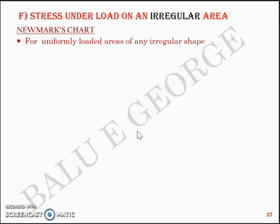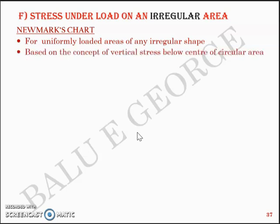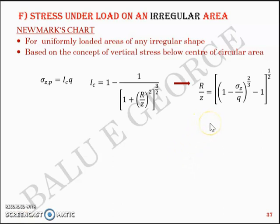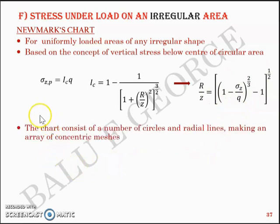For uniformly loaded areas of any irregular shape, you can use Newmark's chart. This is based on the concept of vertical stress below the center of the circular area, which we defined as IC multiplied by Q, where IC equals 1 minus 1 divided by (1 plus (R/Z)²) raised to 3/2. This can be rearranged to give an equation of R/Z related to σZ and Q. Newmark's chart consists of a number of circles and radial lines making an array of concentric meshes.